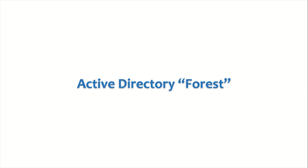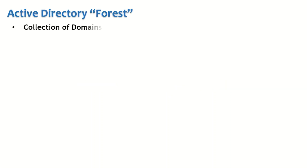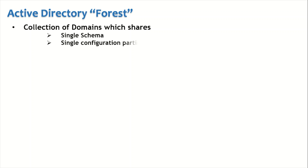Let us understand what a forest is all about. An Active Directory forest is a collection of domains with a single schema, a single configuration partition, and a single global catalog. We are going to cover what a schema, configuration partition, and global catalog mean in depth in our upcoming sessions. But just for the time being, remember that a forest can be defined as a collection of domains which shares a single schema, single configuration partition, and a single global catalog.